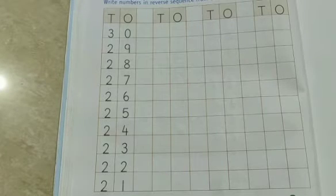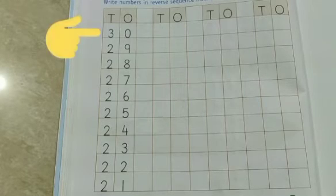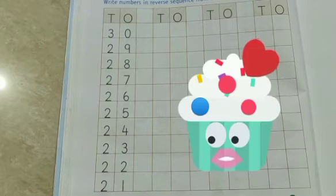So children, in the given place, we will write reverse sequence from 30 to 21. Let's start.